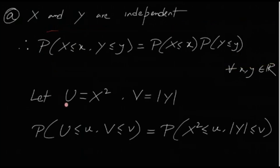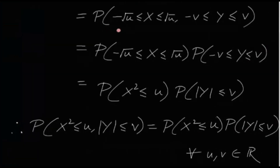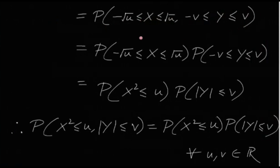Now let U = X² and V = |Y|. The joint CDF, P(U ≤ u, V ≤ v), is P(X² ≤ u, |Y| ≤ v), which equals P(-√u ≤ X ≤ √u, -v ≤ Y ≤ v). This can be split because X and Y are independent.